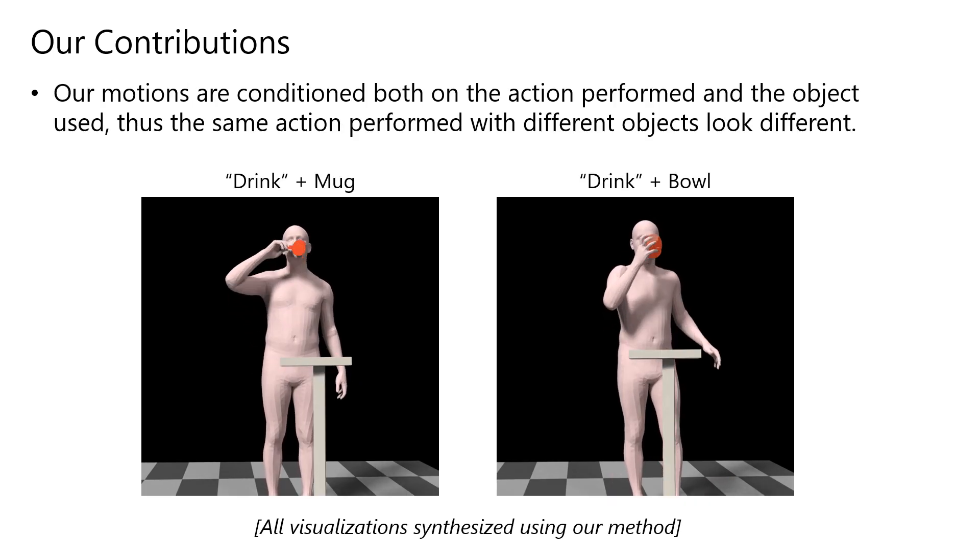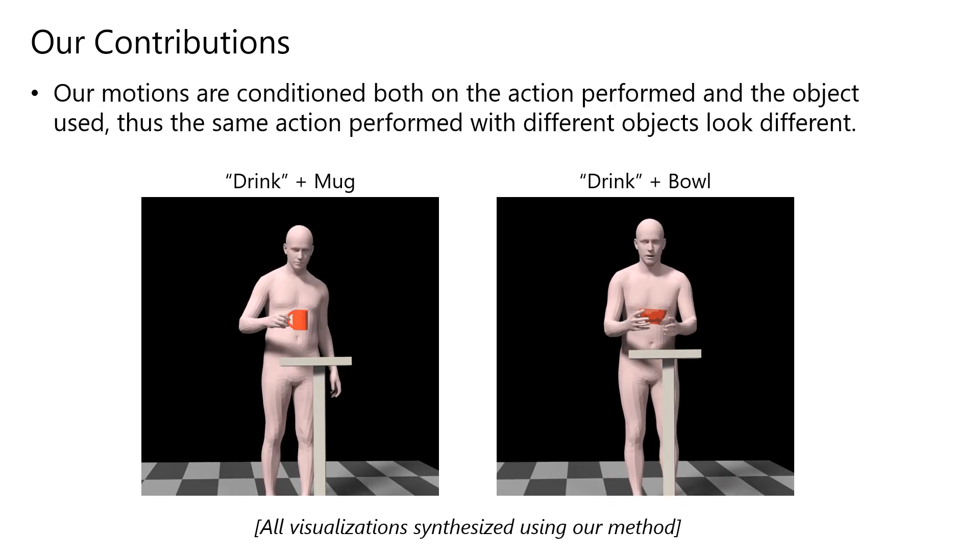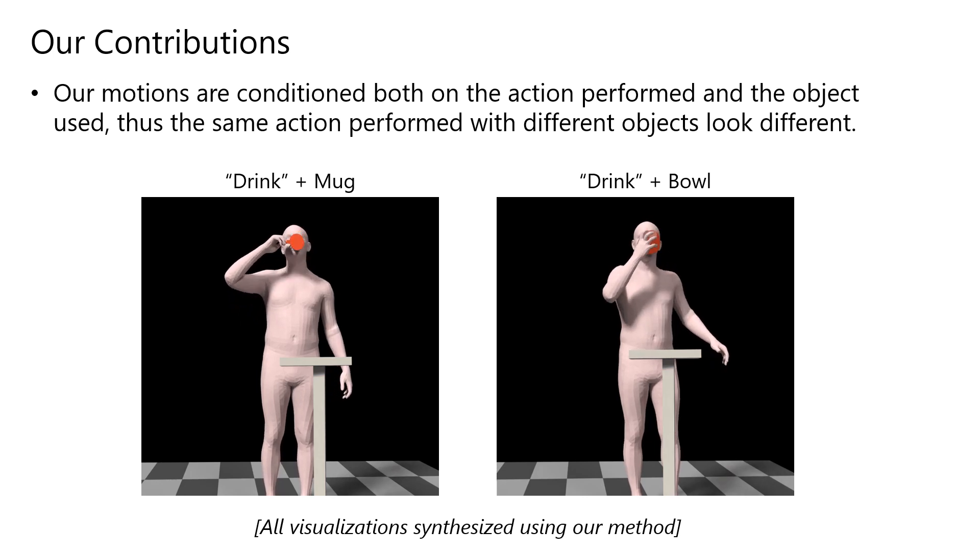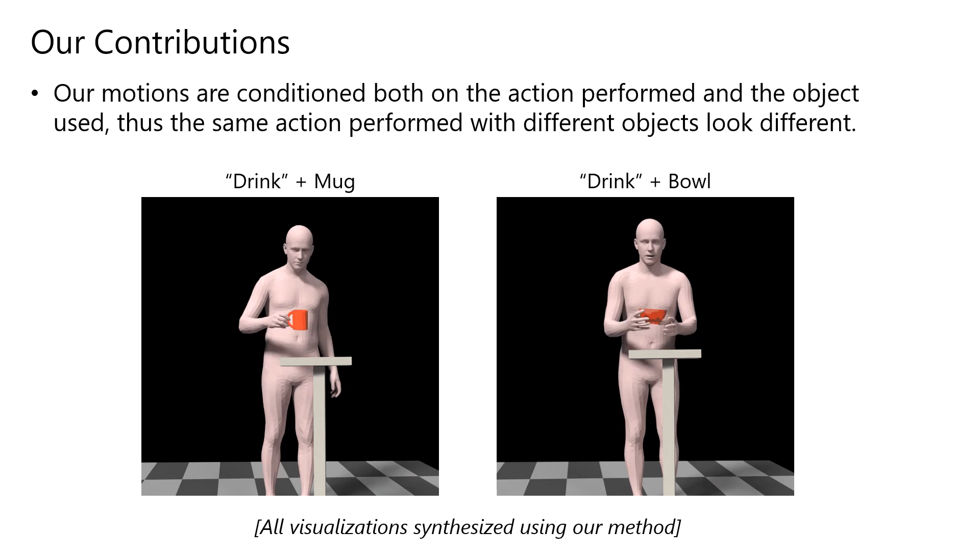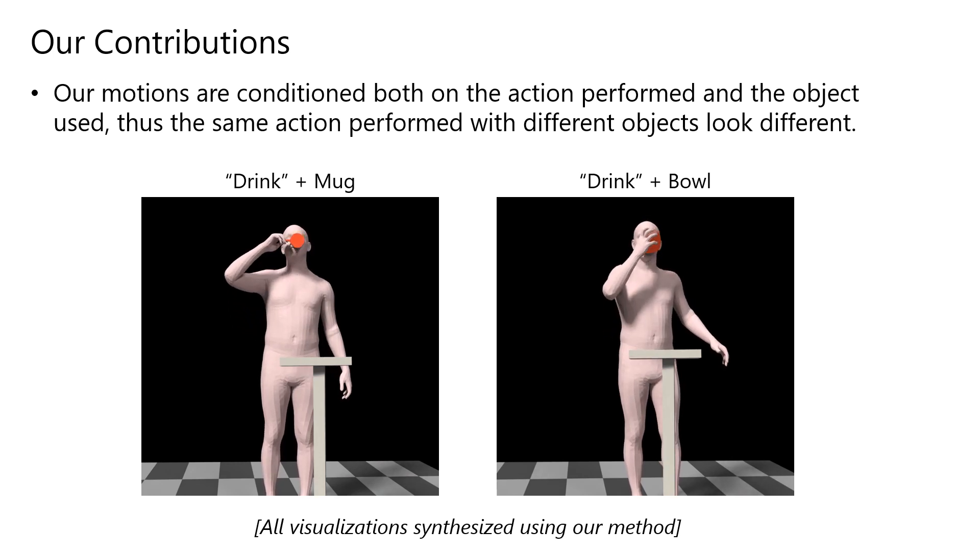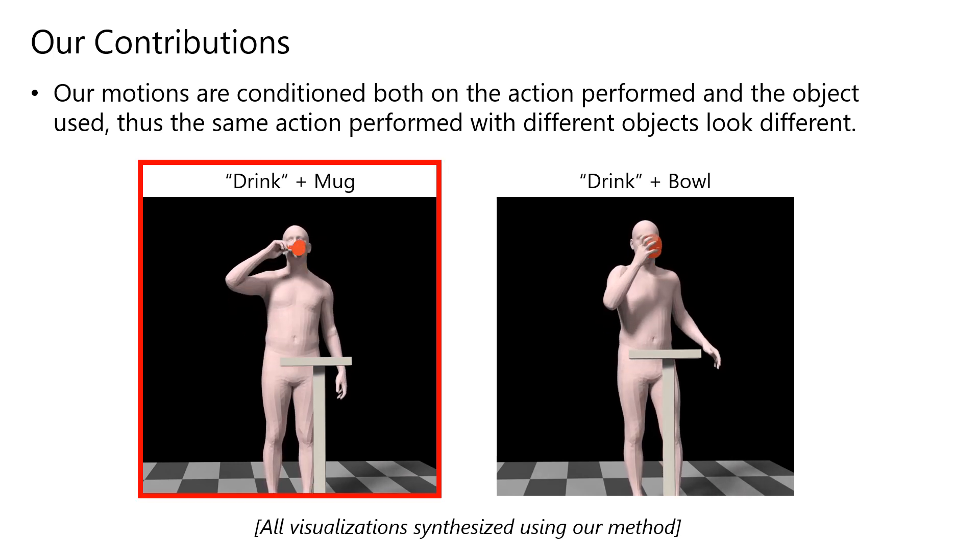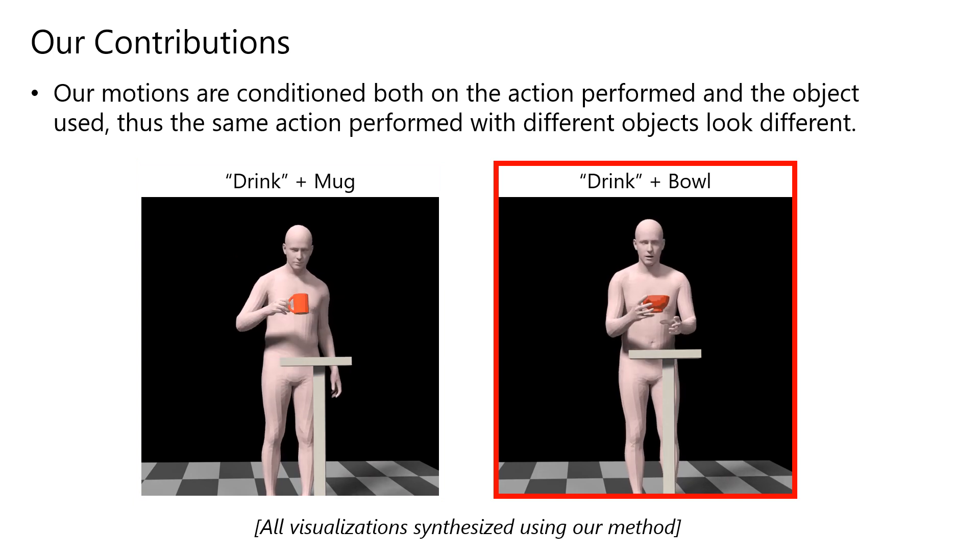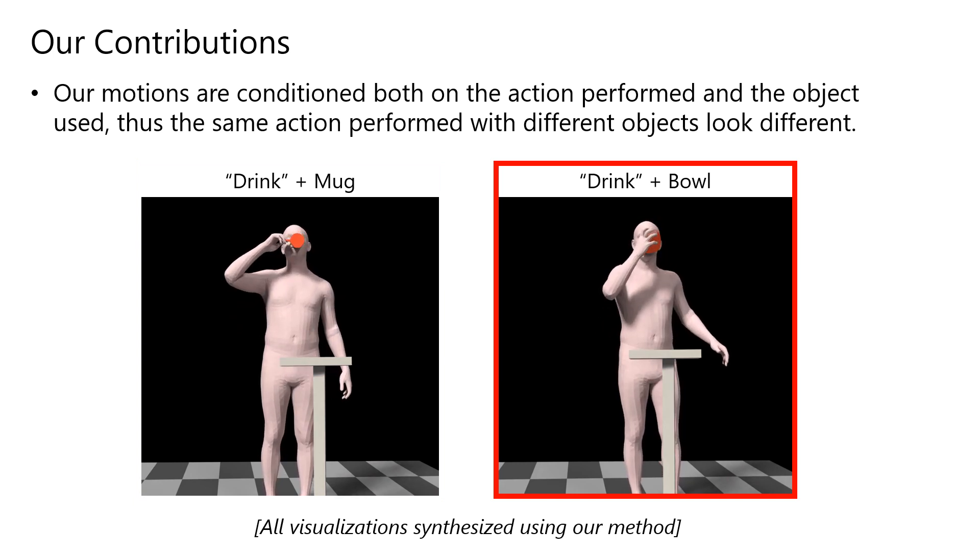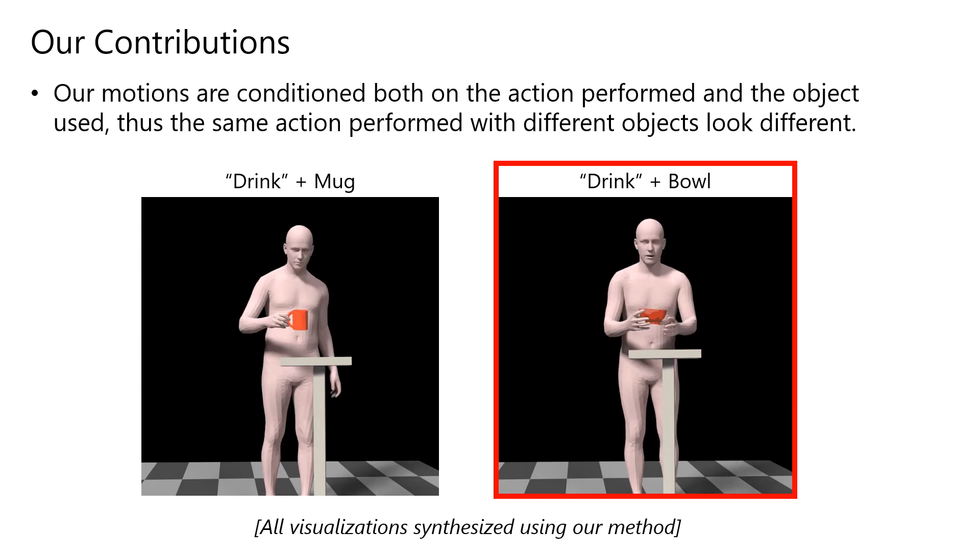Our motions are conditioned both on the performed action and the used object. Thus, the same action performed with different objects looks different. We show drinking actions from a mug as well as a bowl. The bowl is picked up with both hands because of its shape. The differences are learned implicitly by our networks.